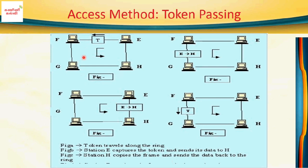In a 4-node ring format, the token passing access method is used. When a node clicks — or captures — the token, it can initiate a transaction. The token circulates, and when a node is ready, it unlocks the token, uses it to send data, and then passes the token to another node.